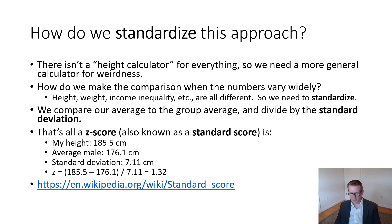What we do is compare our average to the group average and divide by the standard deviation. This is called calculating a Z score, also known as a standard score. If I am 185.5 centimeters and the average American male is 176.1, I take 185.5, subtract 176.1, and divide by the standard deviation of 7.11. What we get is a Z score of 1.32. That's my Z score for height.